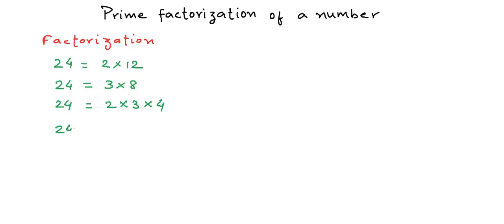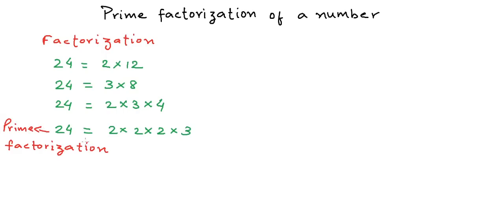For 24, we can have a prime factorization like 2 into 2 into 2 into 3, where it is written only in the form of multiples of its prime factors. So this is the prime factorization of 24.